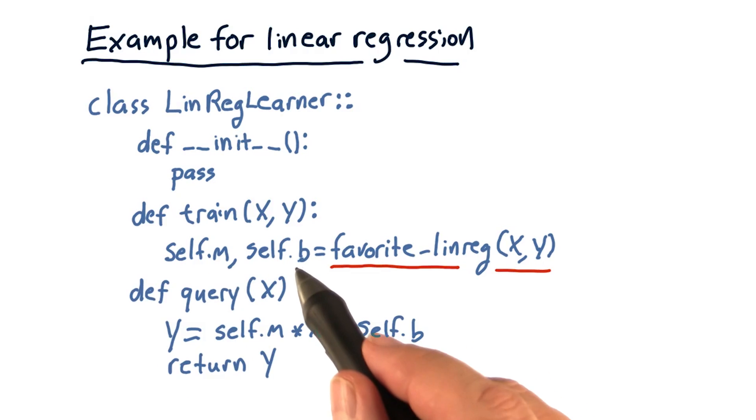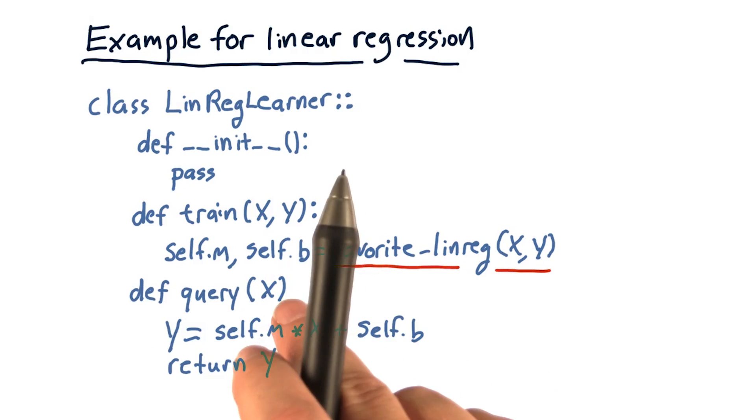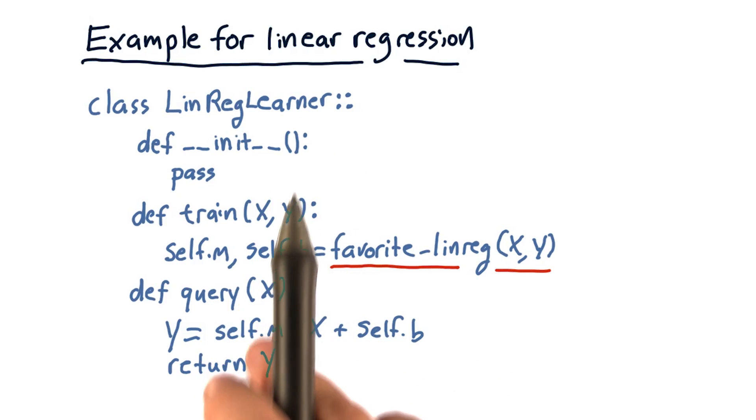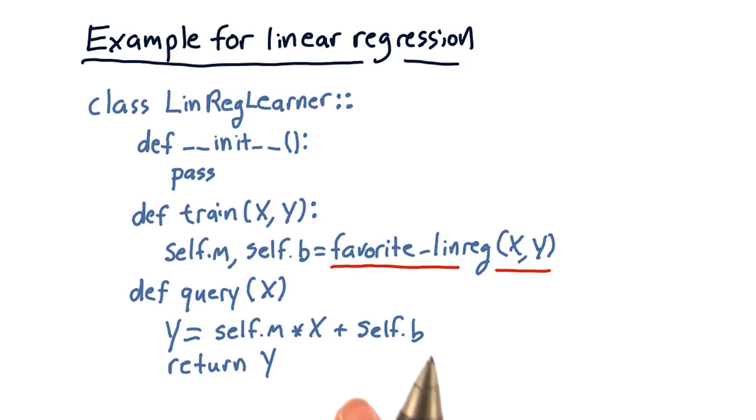Finally, query is passed in x and it's supposed to compute the predicted y given that x. And remember, this is potentially a list of x's and it can also be multidimensional. Anyways, it's very simple. You just multiply that x times m and add b and return y. Boom, that's it.